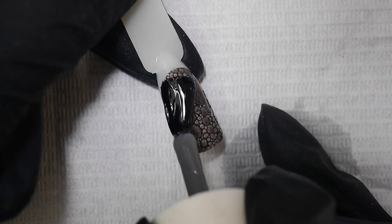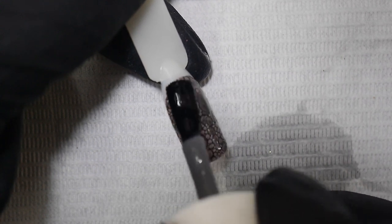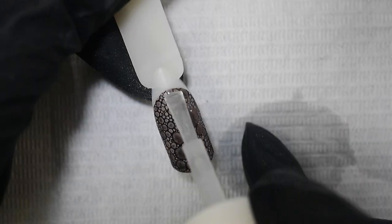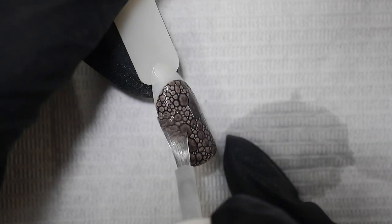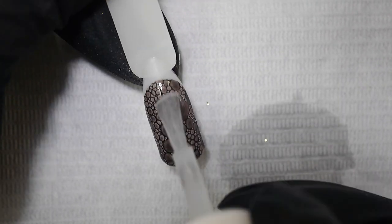So I'm going to come in with a gelish structure gel to smooth any divots and cure that. And then applying a top coat to finish the nail. And this technique, you'll end up with a smooth finished surface.